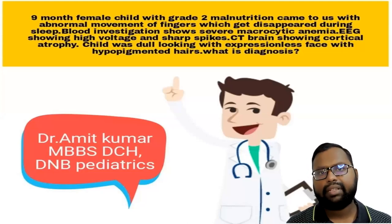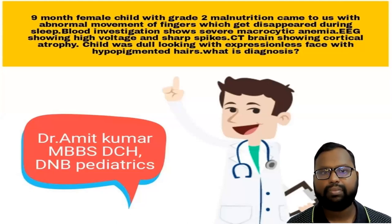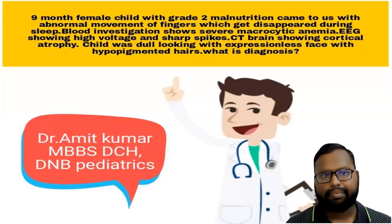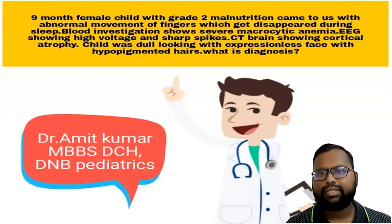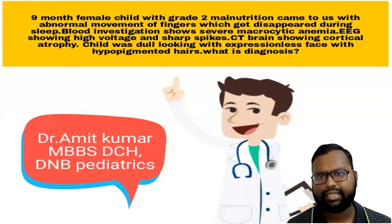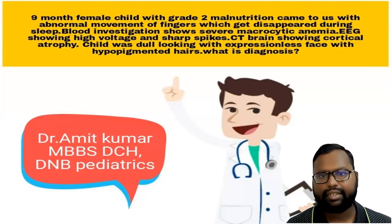The question was related to a 9-month female child with grade 2 malnutrition who came with abnormal movement of the finger. This movement disappeared during sleep. Blood investigation showed severe macrocytic anemia. EEG showed high voltage sharp spikes. CT brain showed cortical atrophy. The child was dull-looking with an expressionless face and hypopigmented hair. So what is the diagnosis and what would be the treatment?